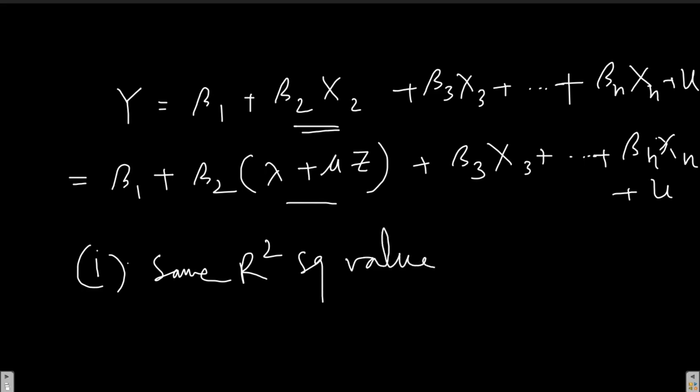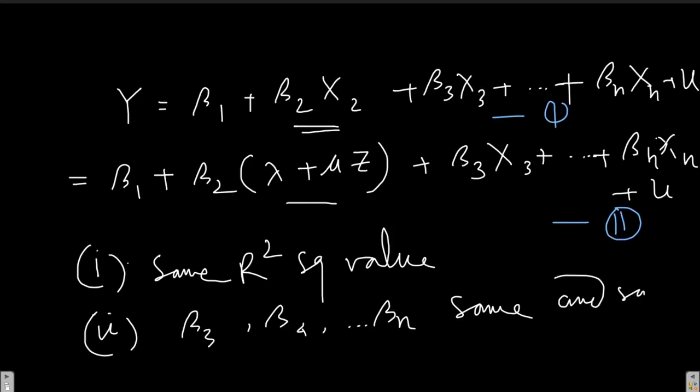Let's name this equation one and equation two. It doesn't matter if I run equation one or equation two, I will have the same R-squared value. Second, the coefficients and standard errors, beta 3, beta 4, and other coefficients beta n, will be the same with the same standard error.